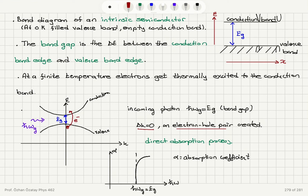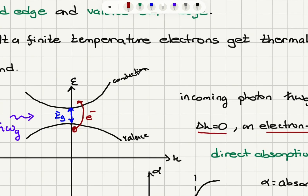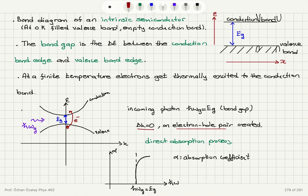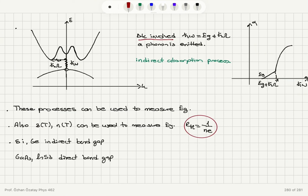Electron-hole pairs can also be created by illumination. If we illuminate the semiconductor with light having energy exactly equal to the band gap energy, and if the conduction band edge and valence band edge coincide, we have a direct absorption process — the incoming photon energy is directly converted to electron energy as the electron moves from one band edge to the other with no change in k-vector, and absorption is significantly higher at the band gap energy. If the maximum of the valence band does not coincide with the minimum of the conduction band, the photon absorption process will involve emission of a phonon — an indirect absorption process.